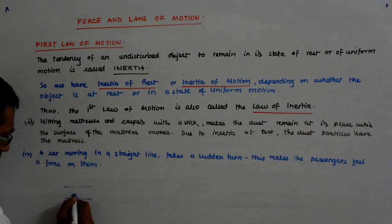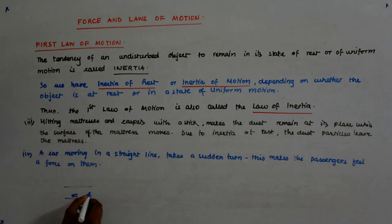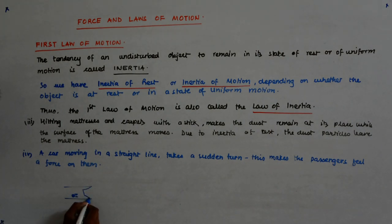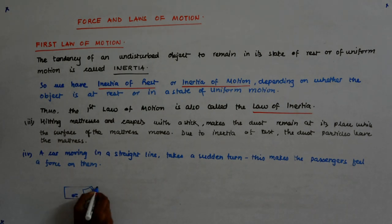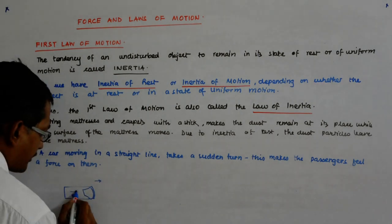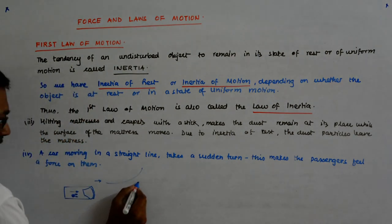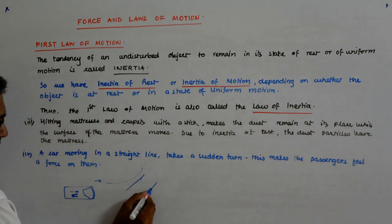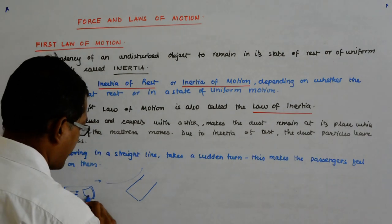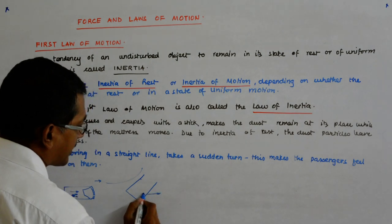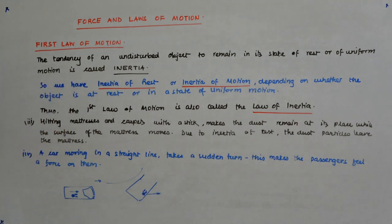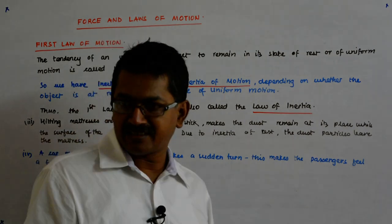This is the head of the passenger and this is the leg of the passenger. We are seeing it from the top, and this is the car with all the windshields. It is moving in this direction. Now the passenger also has a tendency to move in this direction. Suddenly this car takes a turn — from here it suddenly turns. So this fellow kept moving and wants to continue like that, while the car has turned.